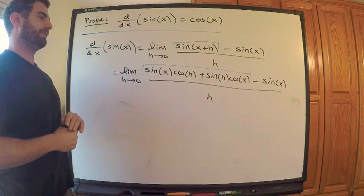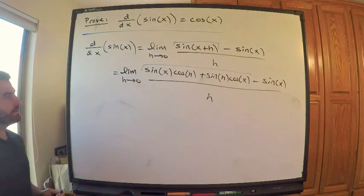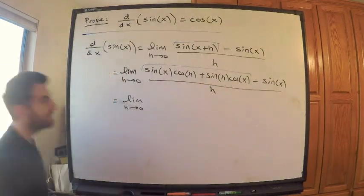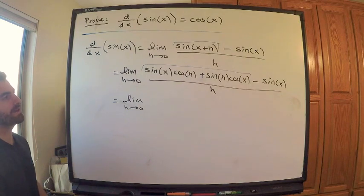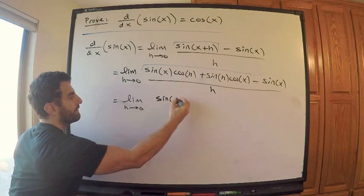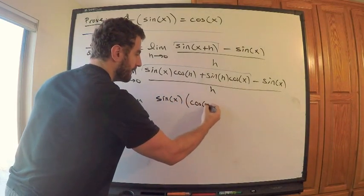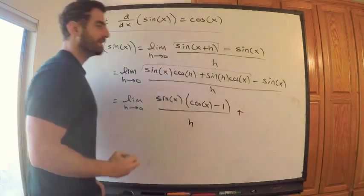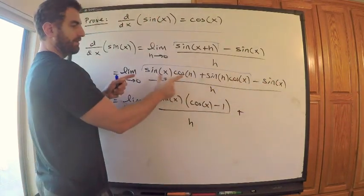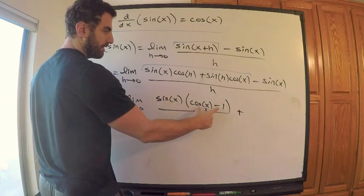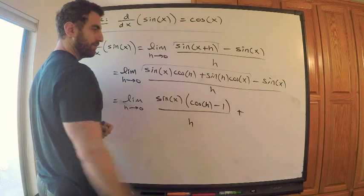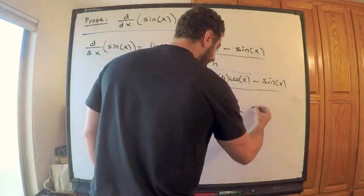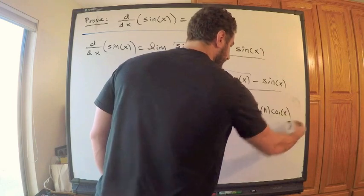Now we need to group things together. This is equal to the limit as h tends to 0. I'm going to group the sine x terms together — I'm actually going to factor that out. So what I have is sine of x times cosine h minus 1, divided by h, plus — I brought the sine x cosine h term over and factored it out — plus sine h cosine x, all over h.